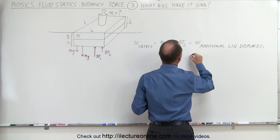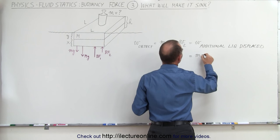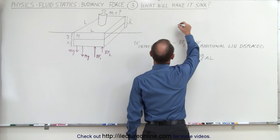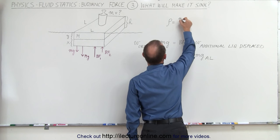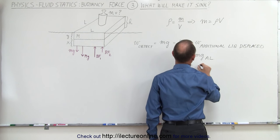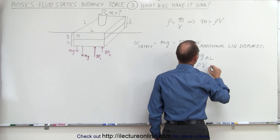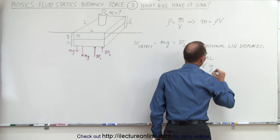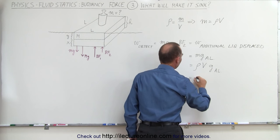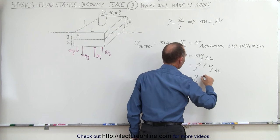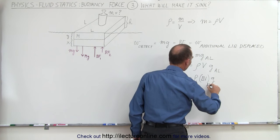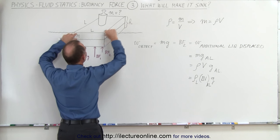The weight of the additional liquid displaced is going to be m times g of the additional liquid — I'll call it Al for additional liquid. Realizing that the definition of density is mass divided by volume, the mass can be written as density times volume. So this becomes the density times the volume times g of the additional liquid — that is, the density of the liquid times the change in volume, times g.